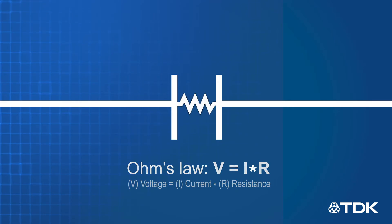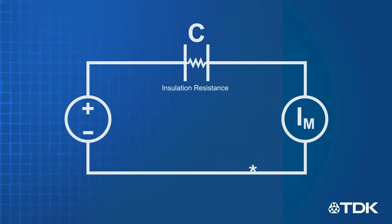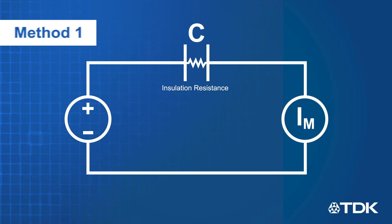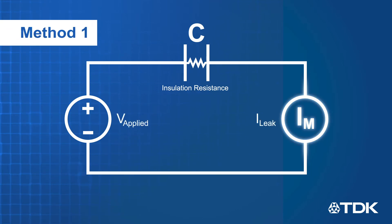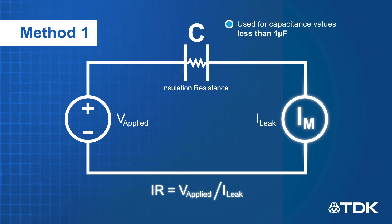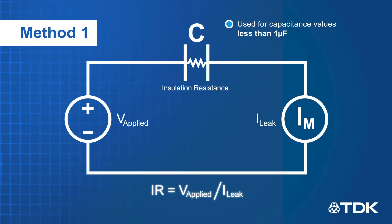There are two basic ways to measure the leakage current. The first is to apply an ammeter in series with the capacitor and a voltage source. This method is usually applied to capacitors less than 1 microfarad. Low capacitance capacitors have low leakage current, thus a low current ammeter can measure the current accurately.